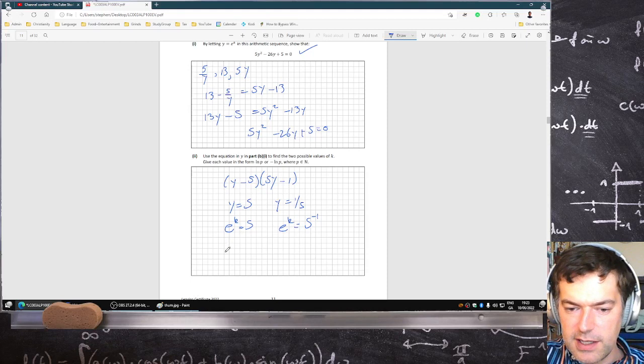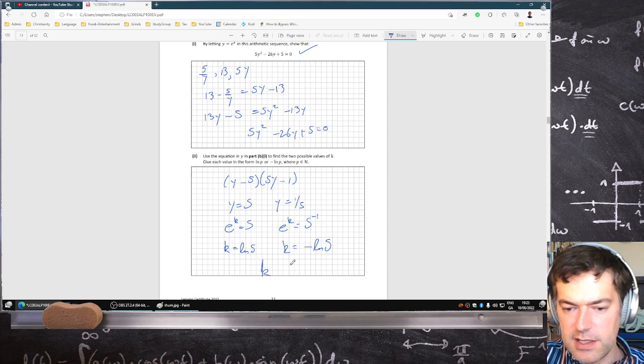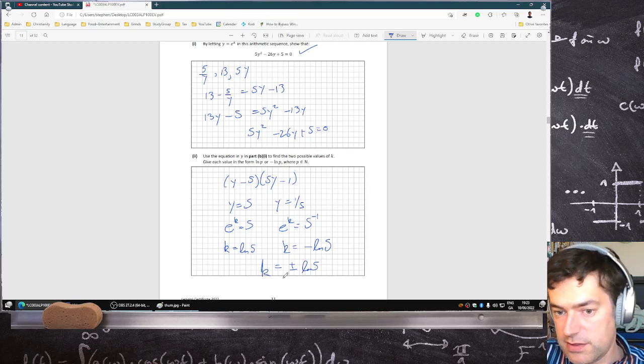And you'll get k is log 5, and k is equal to log 5 power minus 1. Take the minus 1 down and you get this. So in other words, k is plus or minus log 5, which is good because that's what they said the form the answer should be in.